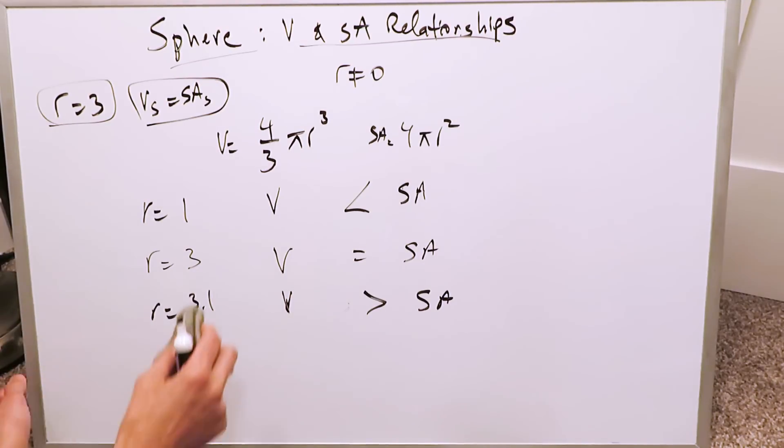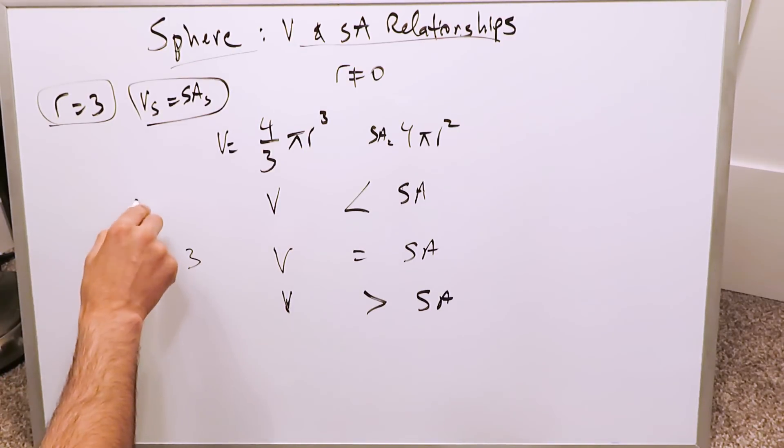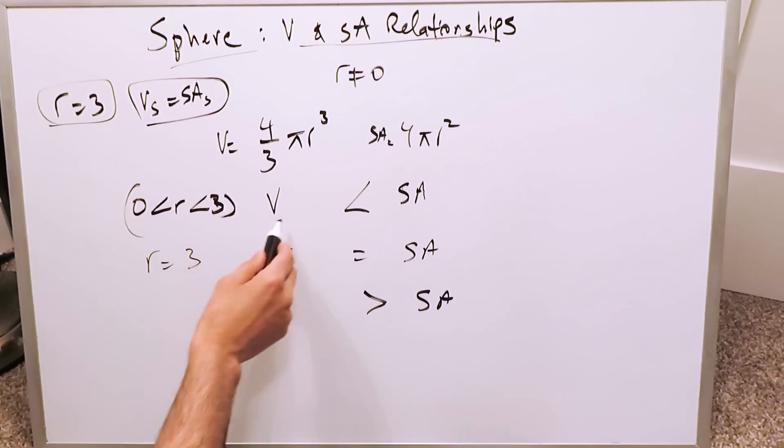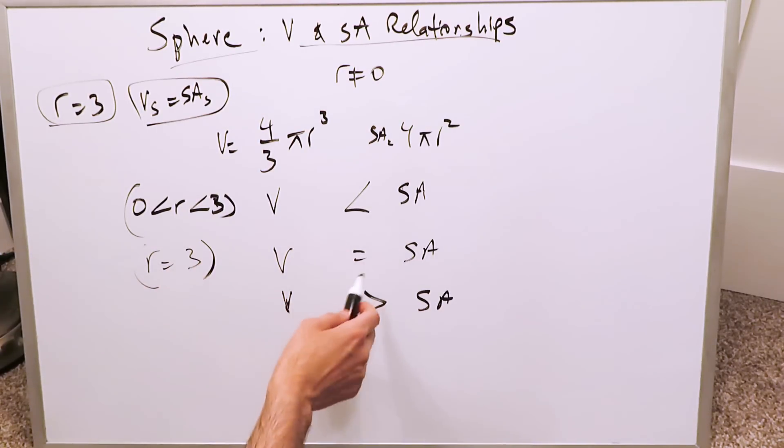Now we clean up these intervals here for you, and it'll be interesting. From 0 to less than 3, the volume is always smaller than surface area for a sphere. For radius equal to 3, the volume is equal to surface area. For radius being larger than values of 3, the volume is always greater than the surface area.